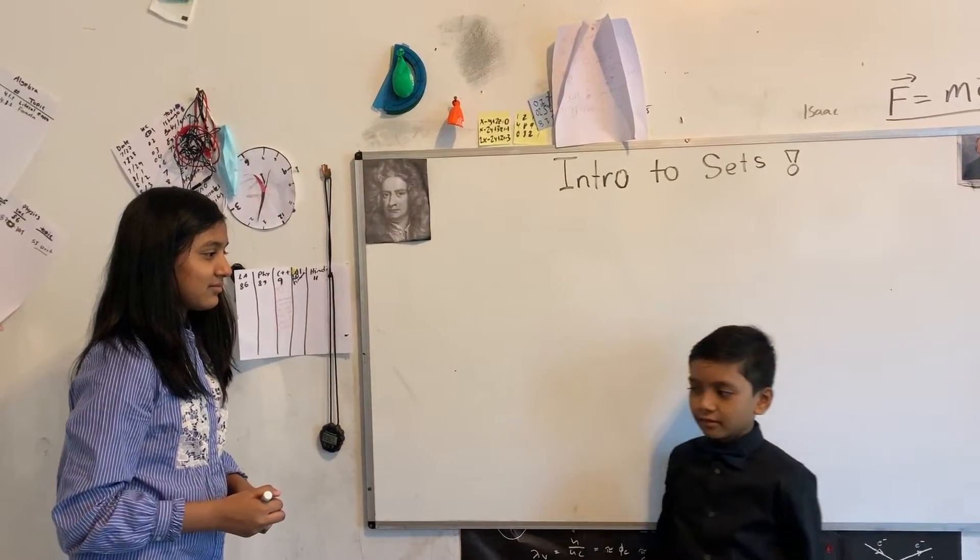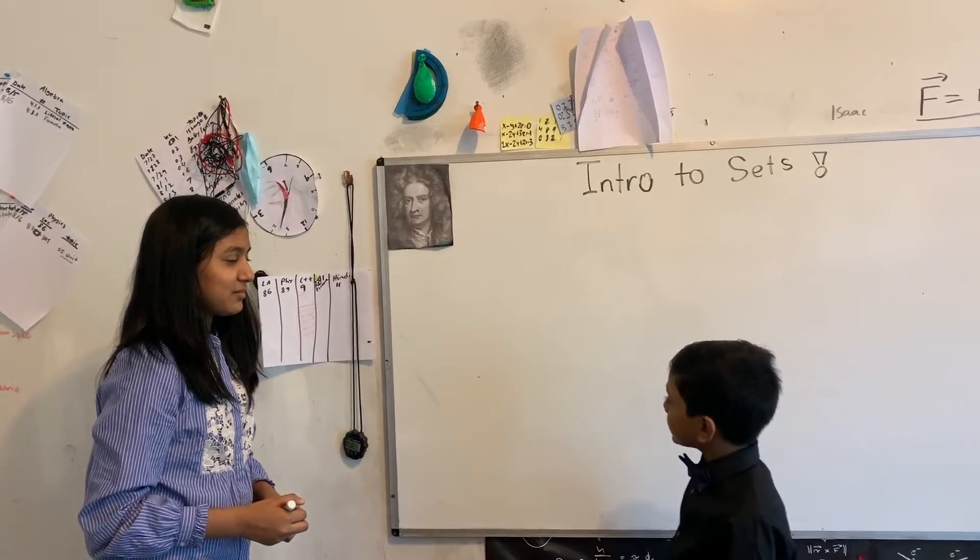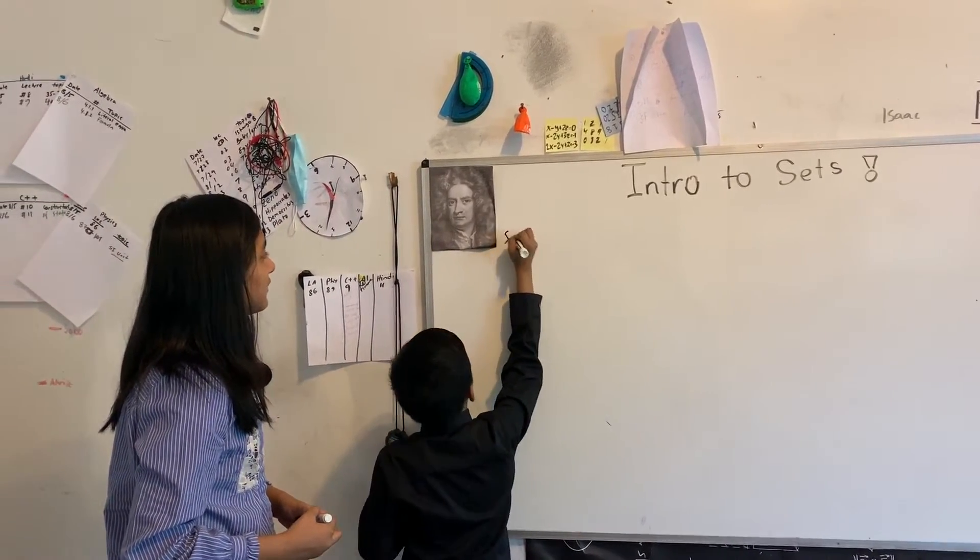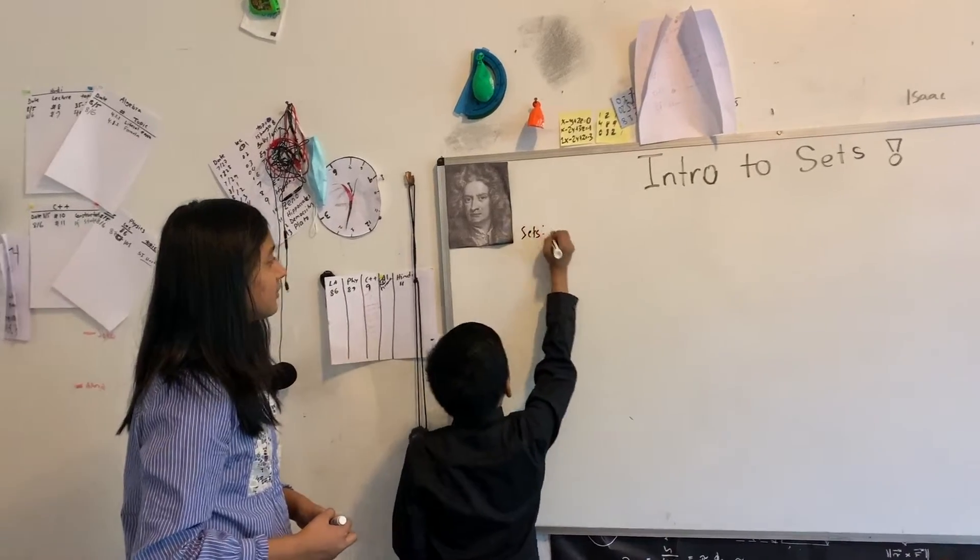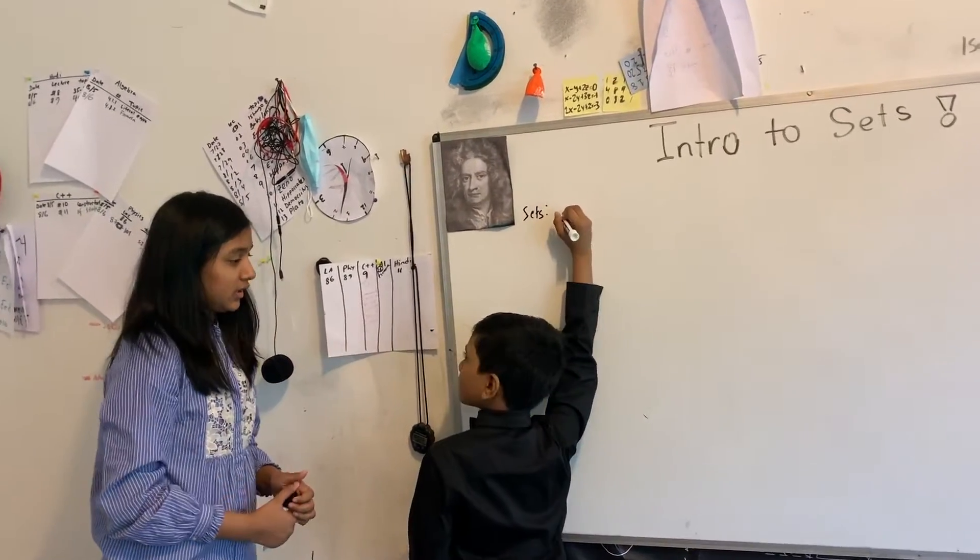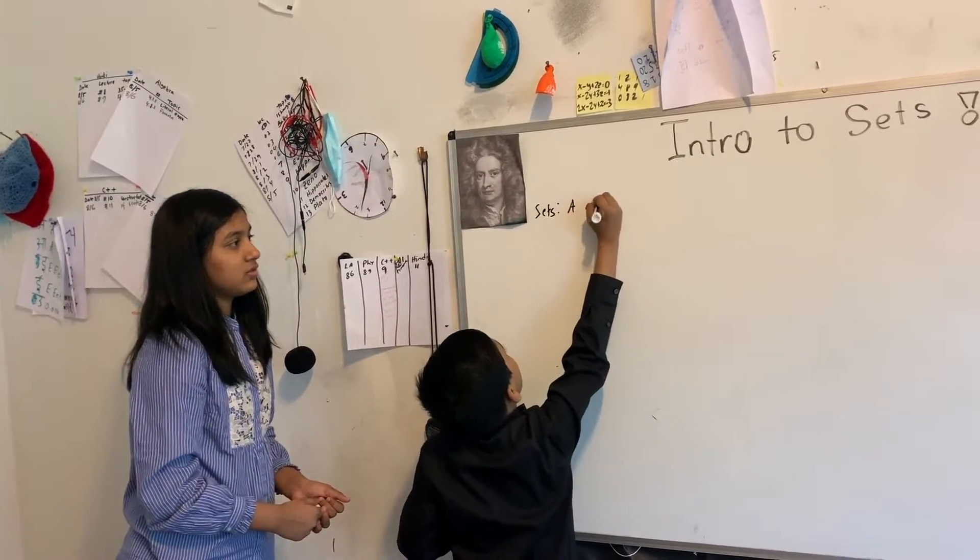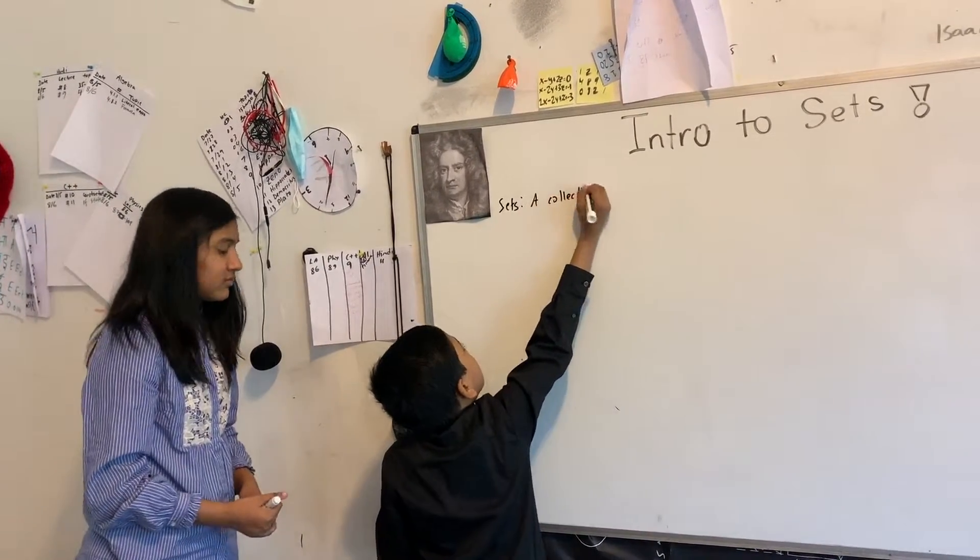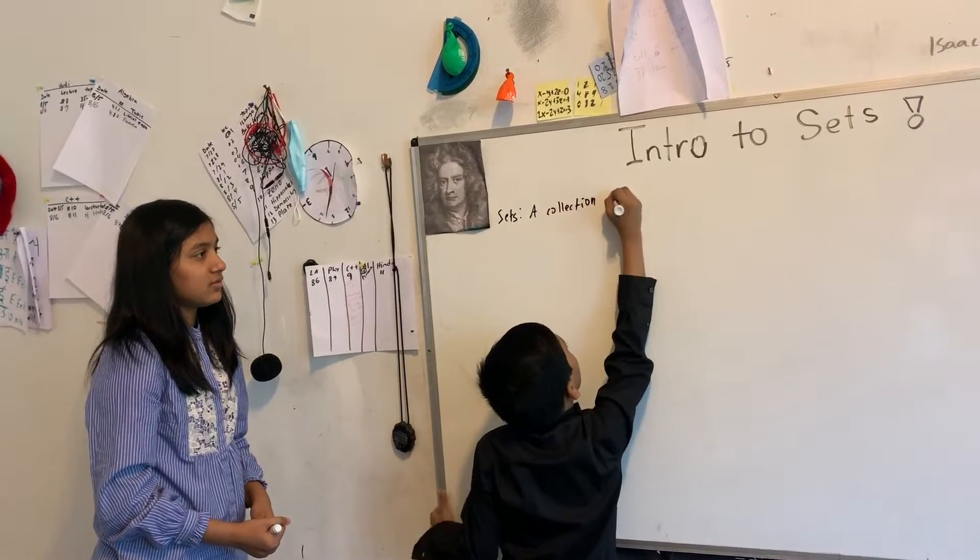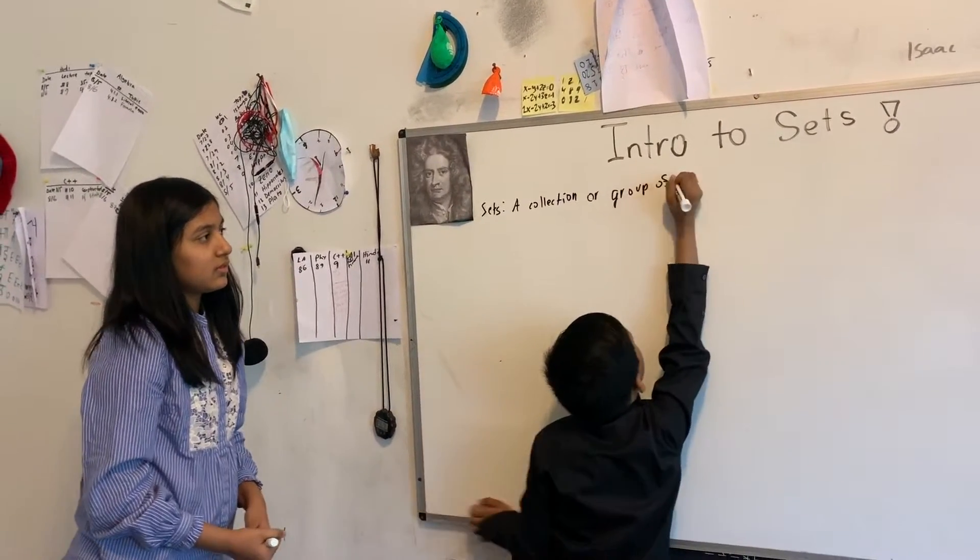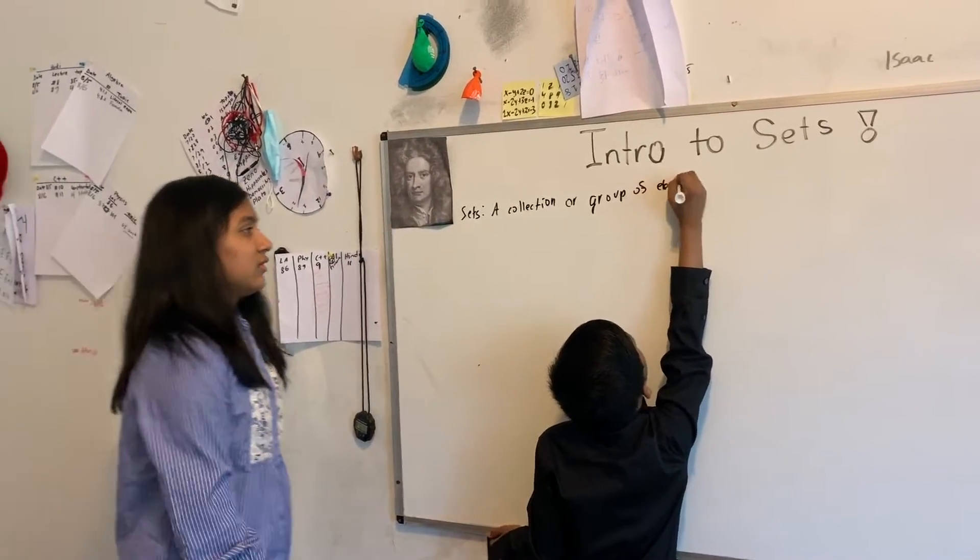Anyways, with that impostor out of the way, let's get to the definition of sets. So, set. Doesn't it mean a group or a collection of things that are elements? Yeah, a collection or group of elements. Things called elements.